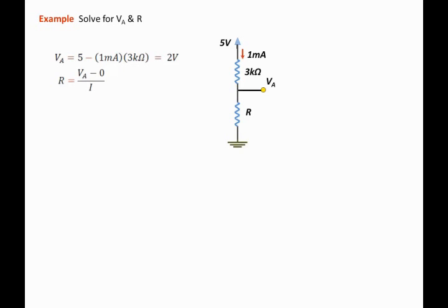We already solved for Va, that is 2 volts, and the current through the resistor is 1 milliamp, then we can state that the resistor R is equal to 2 volts over 1 milliamp, that is equal to 2 kilo ohms.